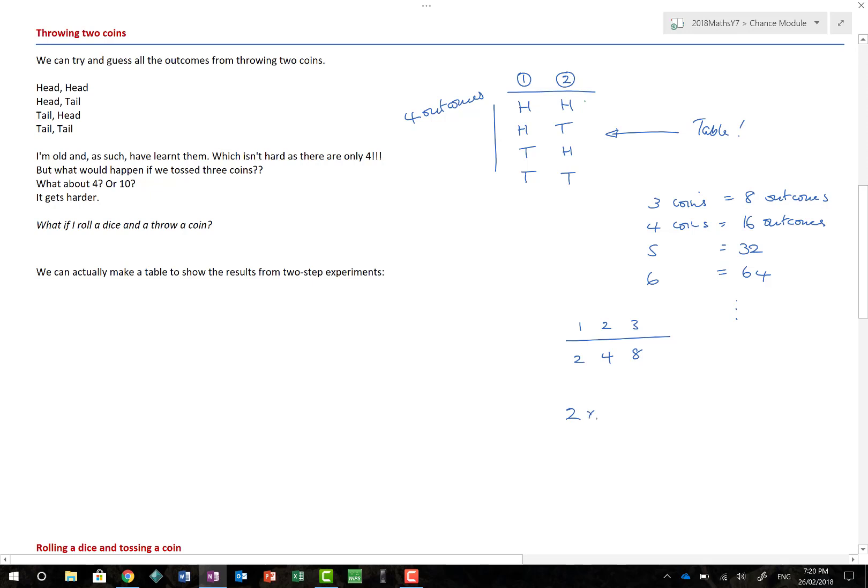Now, how many outcomes are there from just one coin? There were two. When we have two coins, we end up with two times two. Three coins we end up with two times two times two, which is eight. Times that again by two, we get 16. Times by two, we get 32. And that's the pattern. Knowing the single possible outcomes or the possible outcomes for a one-step experiment helps us find the two-step.